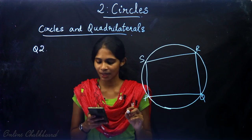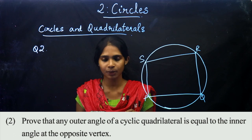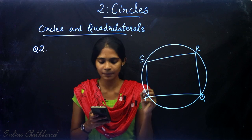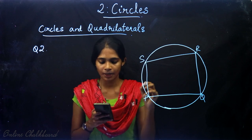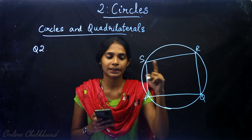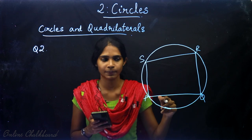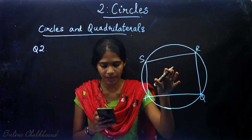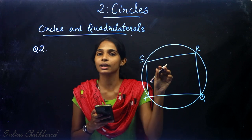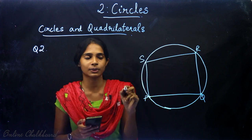Question number 2. Prove that any outer angle of a cyclic quadrilateral is equal to the inner angle at the opposite vertex. A cyclic quadrilateral is a quadrilateral whose all 4 vertices lie on a circle. We have to prove that any outer angle of this cyclic quadrilateral is equal to the inner angle at the opposite vertex.